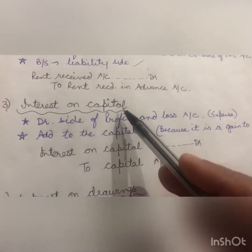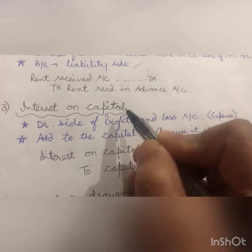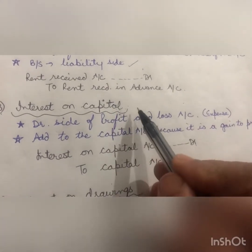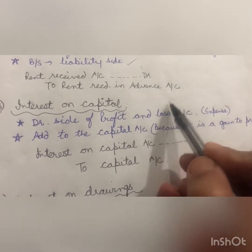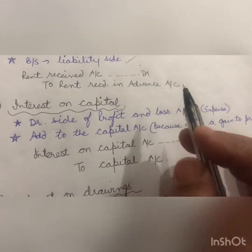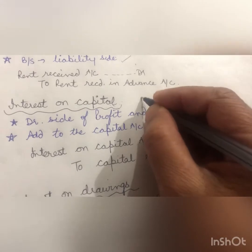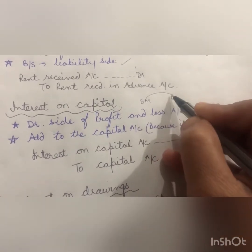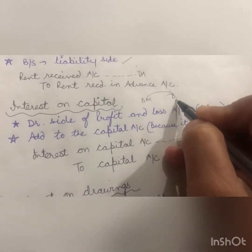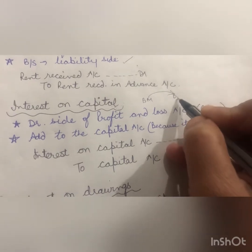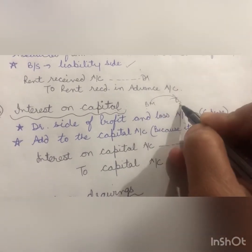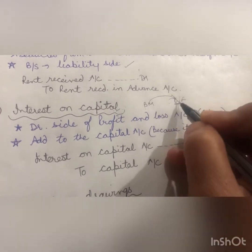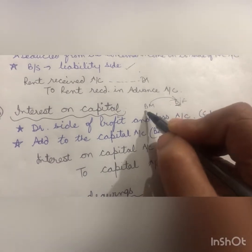The third adjustment is interest on capital. Capital is the amount invested by the businessman in the business. When a businessman starts a firm, the amount with which he starts the business is called capital. Under the business entity concept, the businessman and the business are separate identities. When the businessman invests capital — say, 10 lakh — in the business, that capital is a liability for the firm.